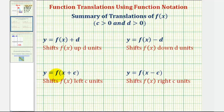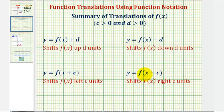But if we have y equals f of the quantity x plus c, notice how this plus c would affect the inputs into function f, and because we're adding c, we actually have to use smaller values of x to get the same inputs as the basic function f of x. So because we'd have to use smaller values of x, f of the quantity x plus c would actually shift f of x left c units. And if we had y equals f of the quantity x minus c, notice here we're subtracting c from x, therefore we need larger values of x to have the same inputs as the basic function f of x. So by subtracting c here, the graph of f of x is actually shifted right c units.